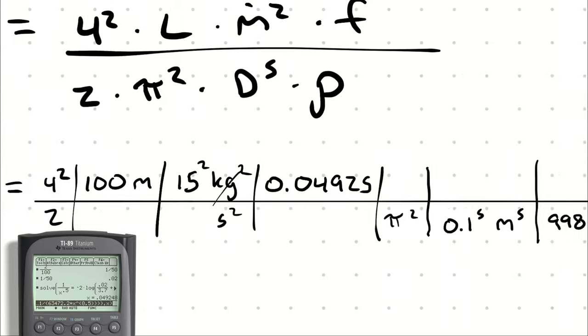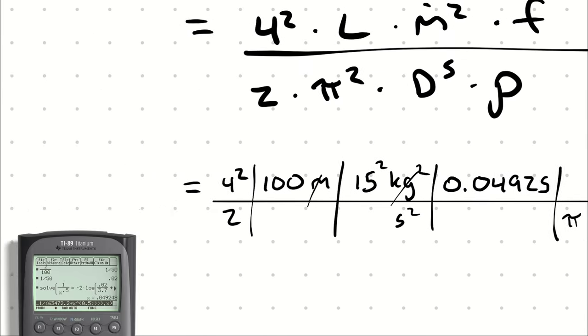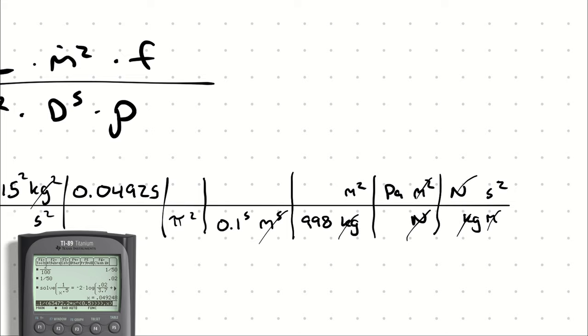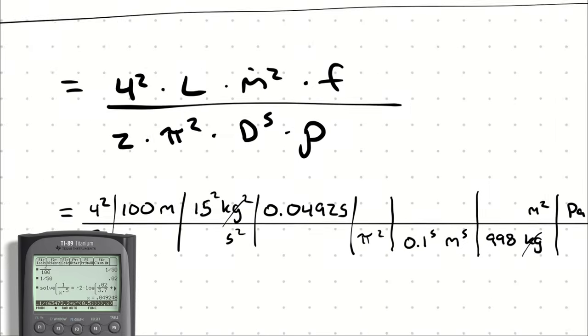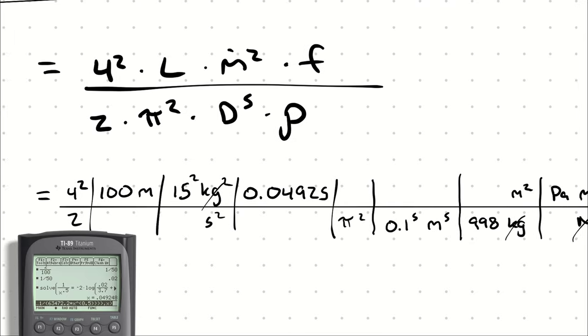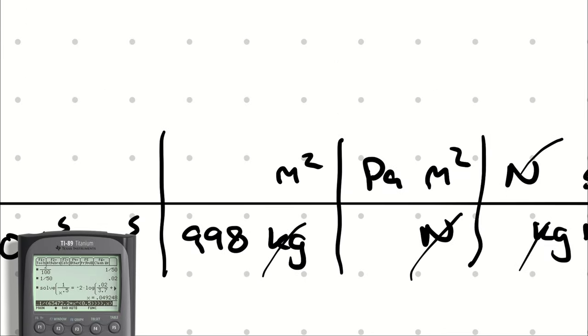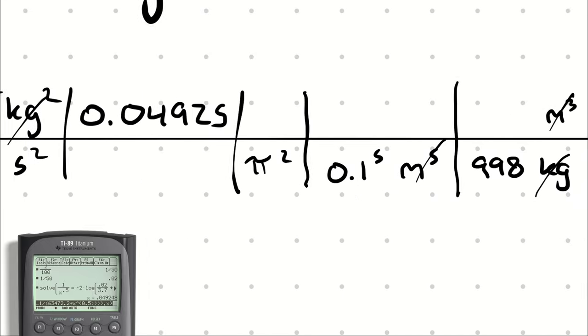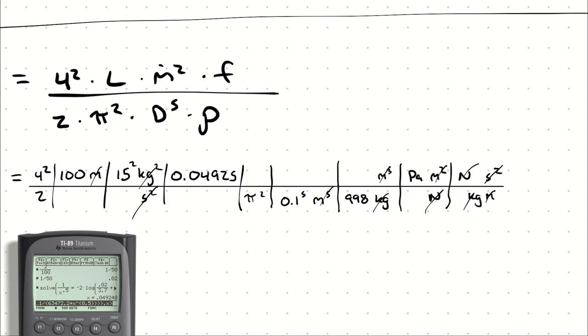So kilogram squared cancels kilograms and kilograms. I have meters and meters to the fifth in the denominator. So I have square meters, square meters, and meters, which means that they don't entirely cancel. Where am I missing a meter? Oh, density is kilograms per cubic meter, not square meters. Okay, let's try that again. We have meters to the fifth power times meters cubed in the denominator, which is 6, 3, 2, and 1, meaning the meters cancel. And then second squared cancels second squared, leaving me with pascals.